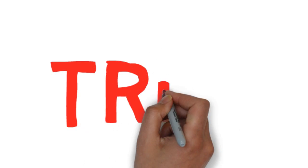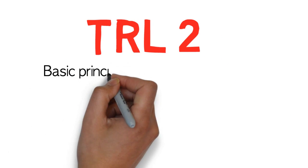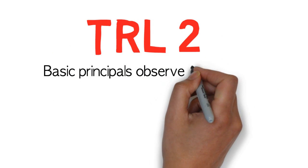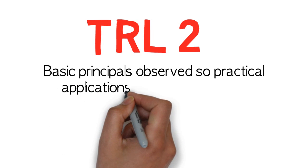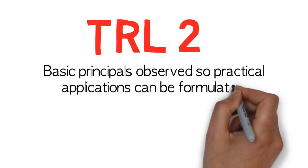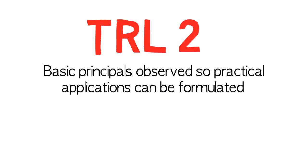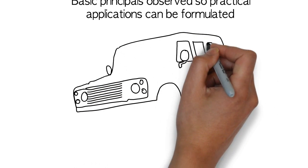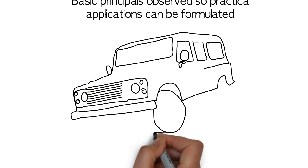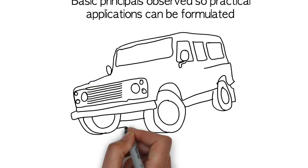TRL 2: This is where invention begins. The basic principles have been observed, so practical applications can be formulated. In the case of the rubber, this rubber could be used for vehicles' tyres.